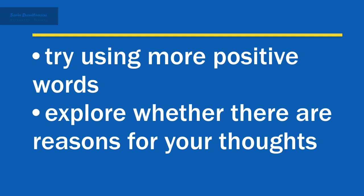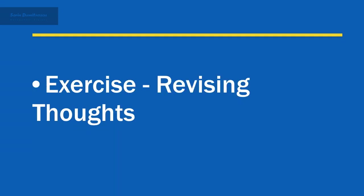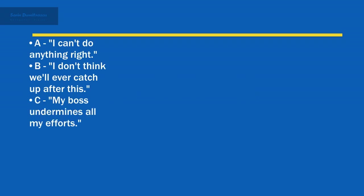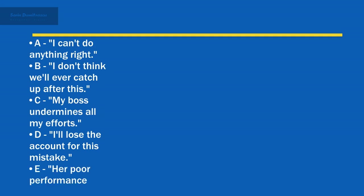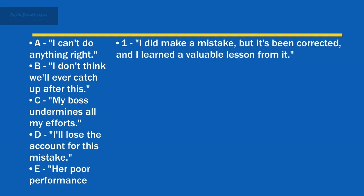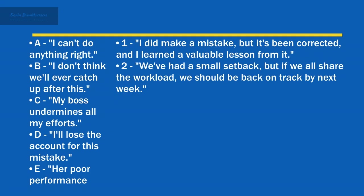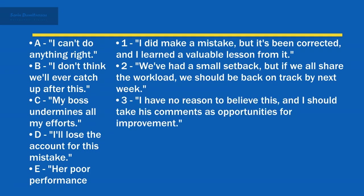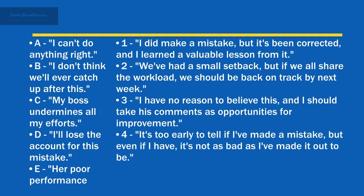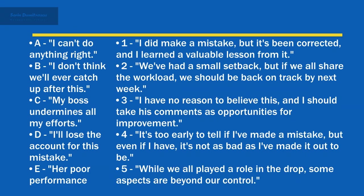Let's try another exercise. Match each negative statement with its revised counterpart. Options: 'I can't do anything right,' 'I don't think we'll ever catch up after this,' 'My boss undermines all my efforts,' 'I lose the account for this mistake,' 'Her poor performance caused the fall in quarterly sales.' In the revisions: not being able to do something right is recognized as not wholly negative and the lesson is drawn from it; the setback isn't grave and sharing the work is proposed as a solution; the lack of evidence for an undermining boss is noted and his comments are interpreted in a more positive light; this revision questions whether a mistake has been made and puts it into perspective; the blame for low sales is shared and the fact that some factors are beyond your control is noted.